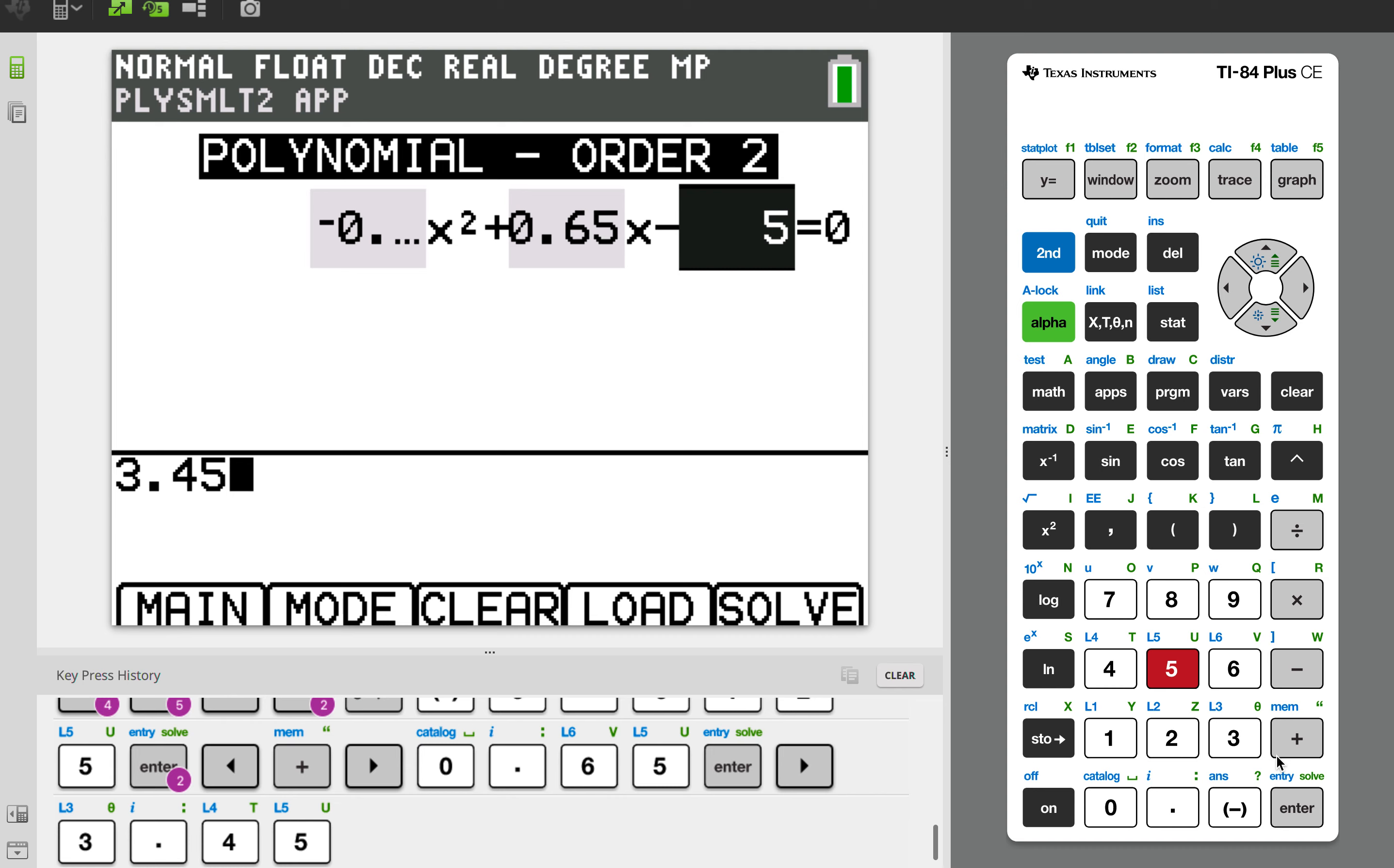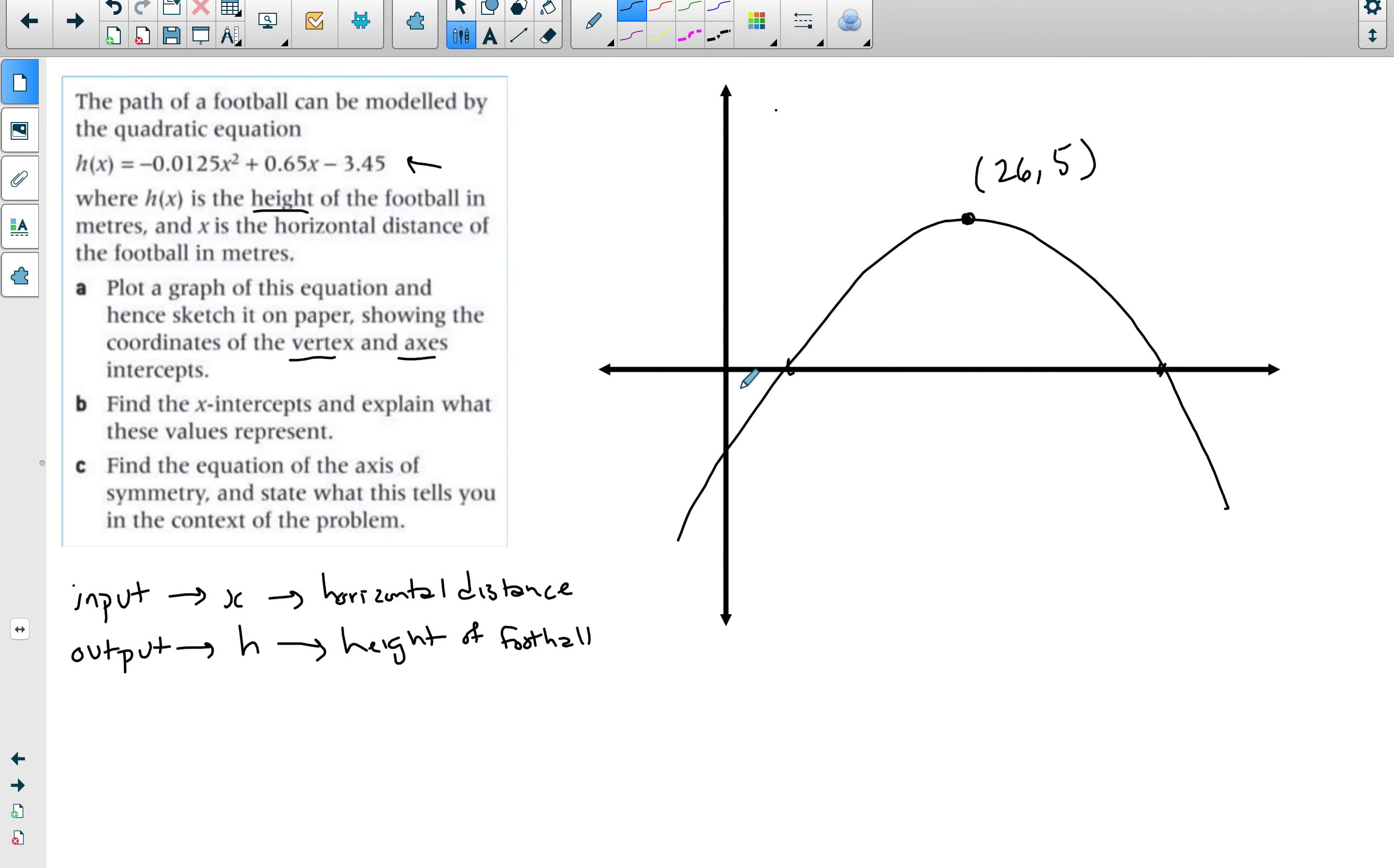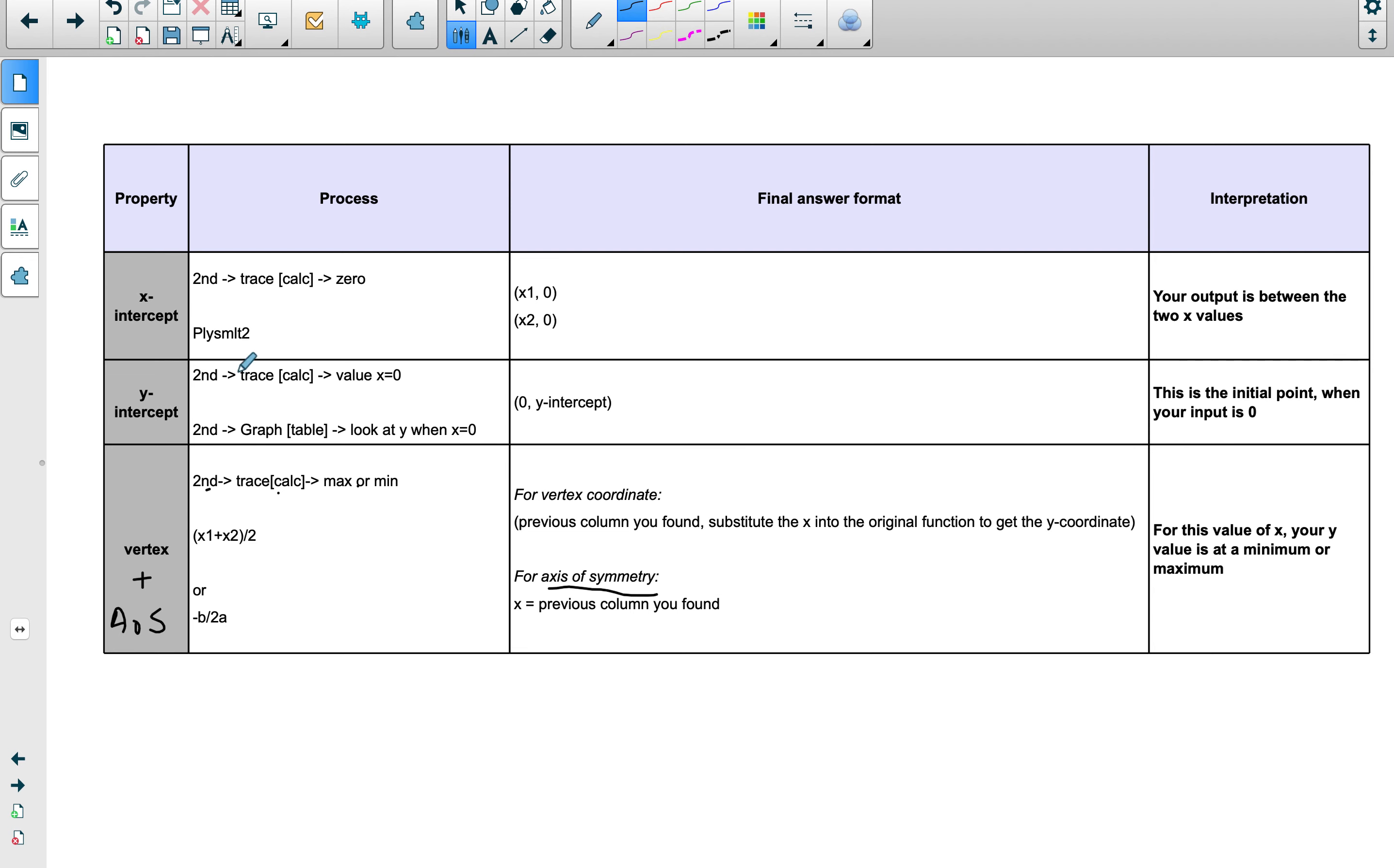When you press on graph you're actually solving it and it's going to give you the roots. It's going to give you the 6 and the 46. So this is going to be 6 and this is 46, but remember you need to write them as coordinates, so this is (6, 0) and this is (46, 0) because they are x-intercepts. When you're doing x-intercepts the y-value is 0. This is how the final answer is going to look like.